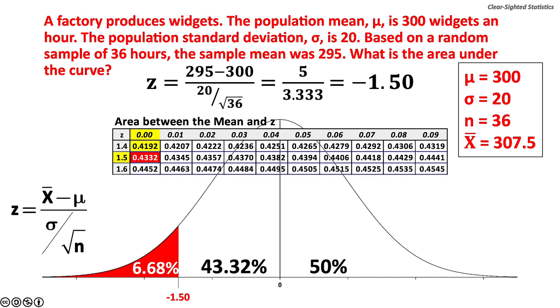Based on a random sample of 36 hours, the sample mean is 295. What is the area under the curve? The z value equals negative 1.50. The sample mean of 295 widgets produced represents 43.32% of the curve below the population mean. 6.68% of the curve is in the left tail, which is the area in red.